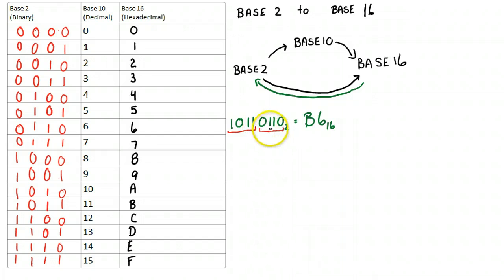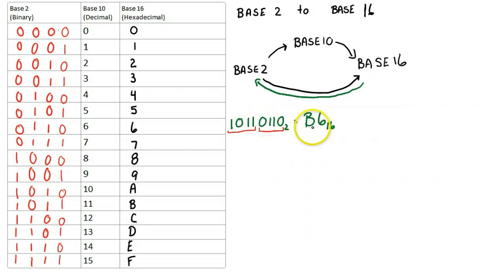To go from base 2 to base 16, I simply group them in chunks of 4. And what that means is each one of these hexadecimal digits represents 4 binary digits.